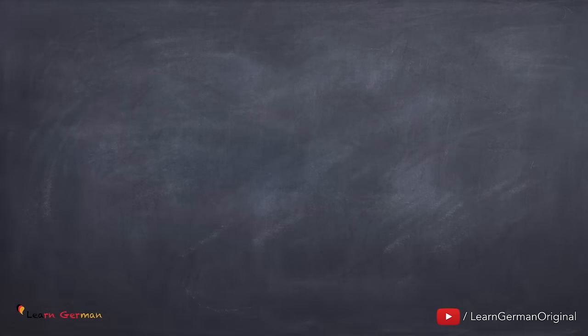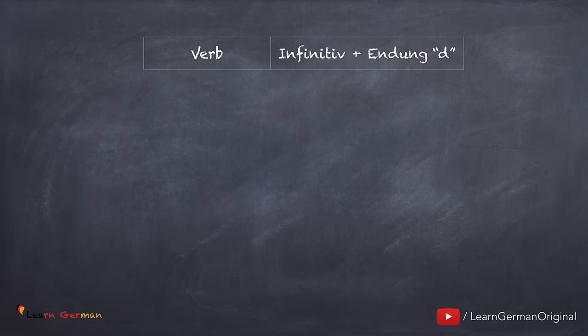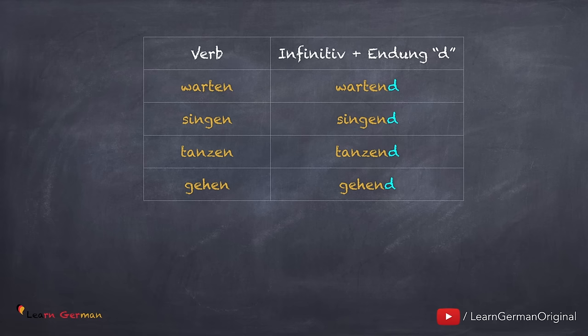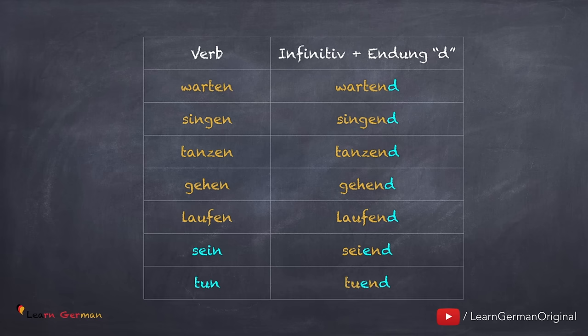Man bildet Partizip 1, indem man am Ende vom Infinitivverb ein D hinzufügt. Zum Beispiel: Warten → Wartend, Singen → Singend, Tanzen → Tanzend, Gehen → Gehend, Laufen → Laufend. Das ist mit allen Verben möglich.